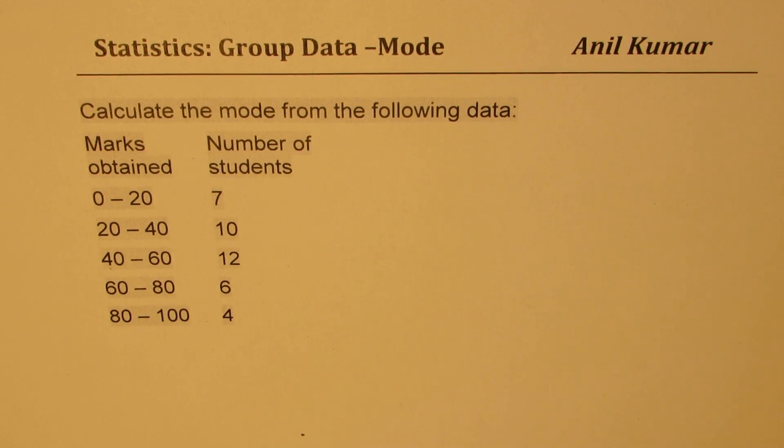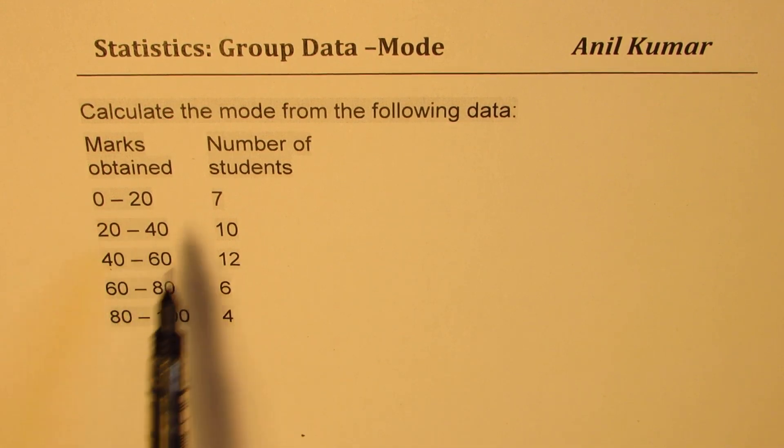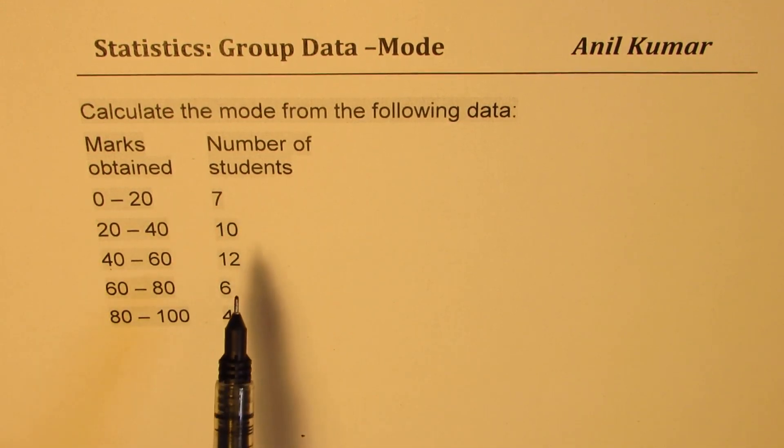We need to calculate mode from the following data, marks obtained, number of students. The interval for marks obtained is 20 and number of students as you can see is 7, 10, 12, 6 and 4.